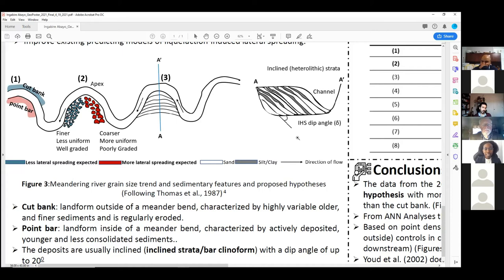Typically, these deposits are inclined at an angle of up to 20 degrees within the subsurface towards the river. And we believe that this is a better representation of the pre-existing static stresses than the topographic slope that we usually include in our models. Therefore, our third hypothesis states that the higher this angle, the larger the deformation or lateral spreading.